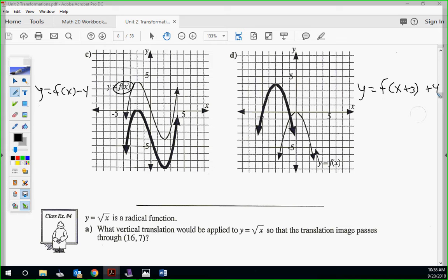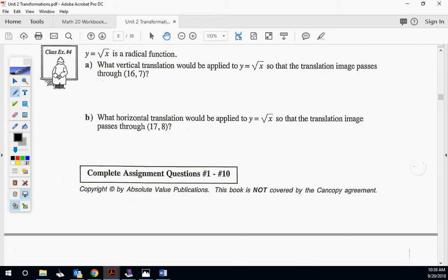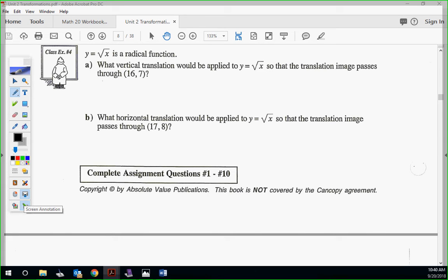And a lot of you guys from unit 1 need to refresh that because we missed that stuff. You need to get that function notation down. Okay. Last example. For this one. Then we'll move on. Y equals root x is a radical function. What vertical translation would be applied. This is a really good diploma type question. What vertical translation would be applied to y equals root x so the translation image passes through (16, 7)? So, somebody just give me some ideas right now. Let's just do an open forum here. How would you go about trying to do this? I'll go Aiden first. I haven't heard from him yet. And then you Travis if he doesn't say what I want. Go ahead, Aiden. What would you try?